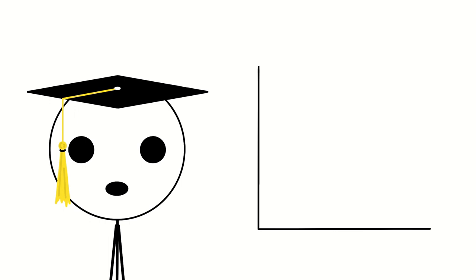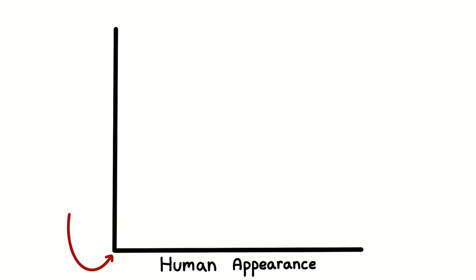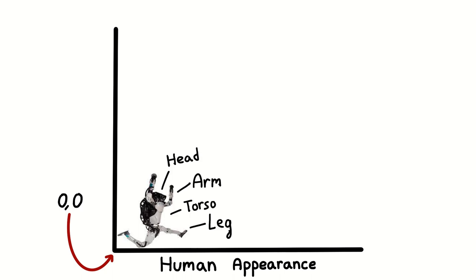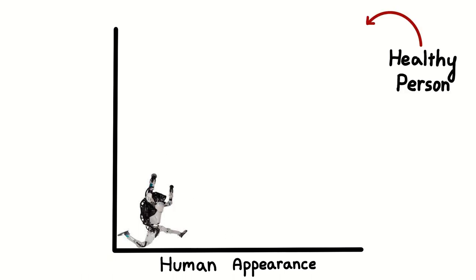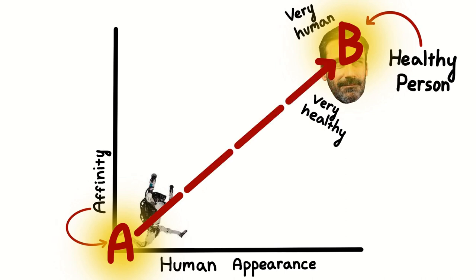Take a chart wherein the human appearance becomes more apparent as you travel along the x-axis. You start here, at 0-0, with, let's say, a Boston Dynamics robot. This is clearly not a human. Only the basic shape is vaguely humanoid. Then up here, you end with a healthy person. Let's say, Steve Buscemi. Actually, let's say, John Hamm. He looks very human and very healthy. Now, the y-axis represents affinity. Or more plainly, likability. As you travel from point A to point B, your affinity towards different levels of humanness increases at a steady rate, right? Wrong.